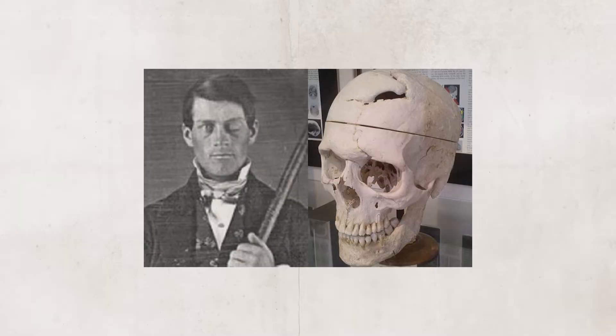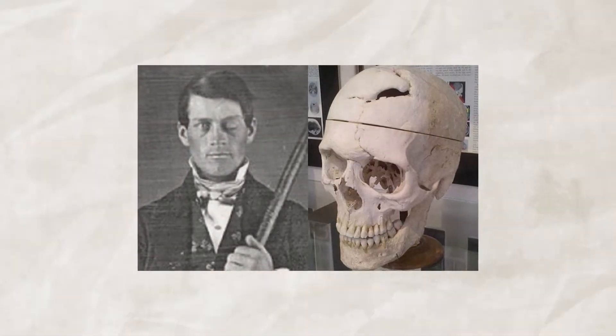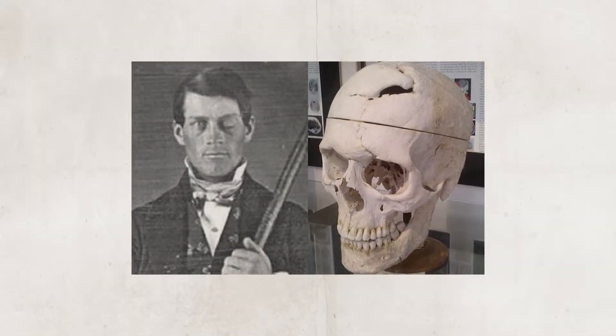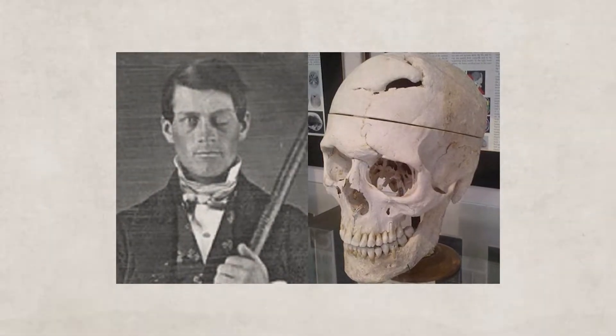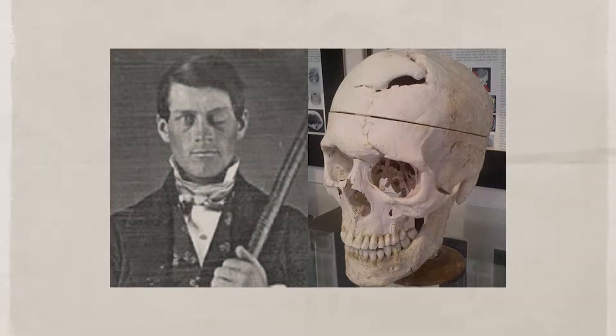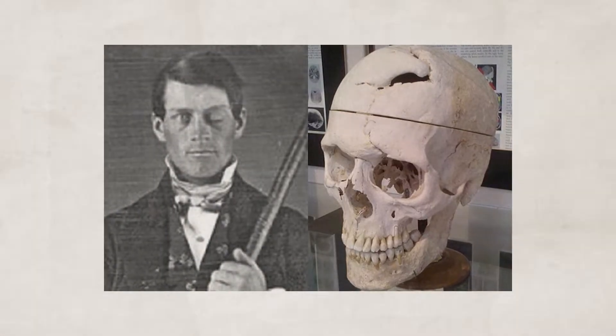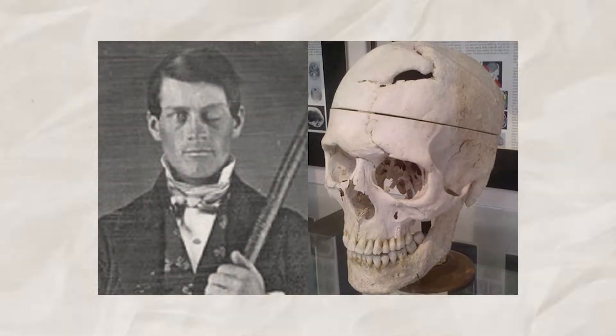One important case study is Phineas Gage. He was a railroad worker who was injured by an explosion where a tamping rod shot clean through his head. He shocked everyone by being able to walk partway back to the doctor and seemed to suffer no cognitive defects, at least at first. It was then discovered that he had a severe personality change. The area on his brain that was damaged was his prefrontal cortex, and the connection to his limbic system was severed as well. As we learned in the last video, this area is important for judgment and emotional regulation — he no longer was the same person as before.